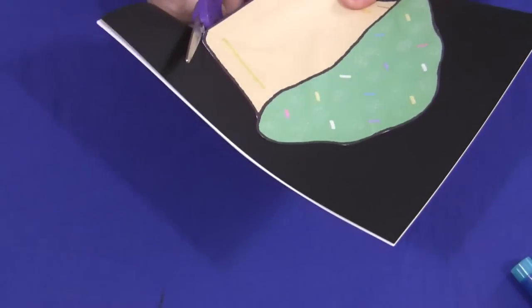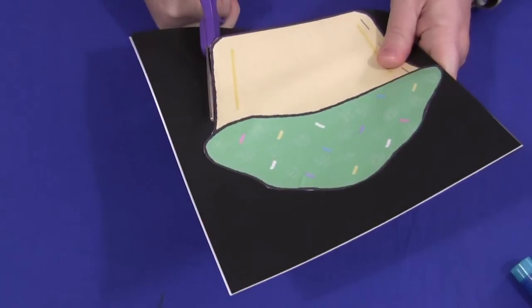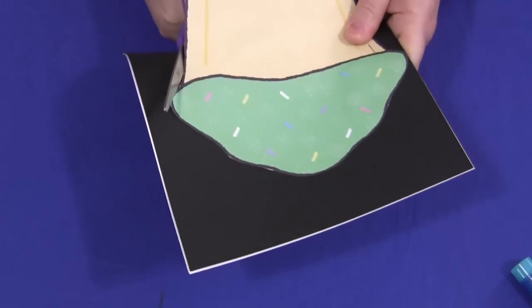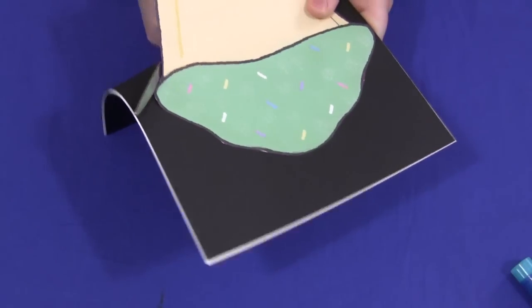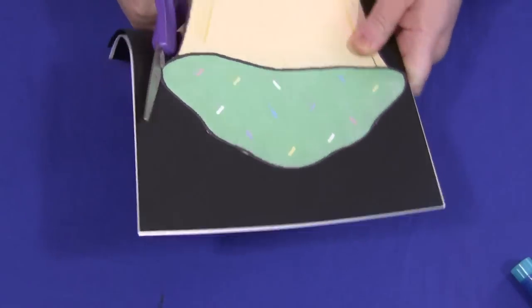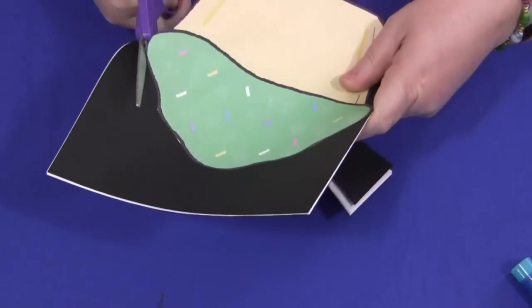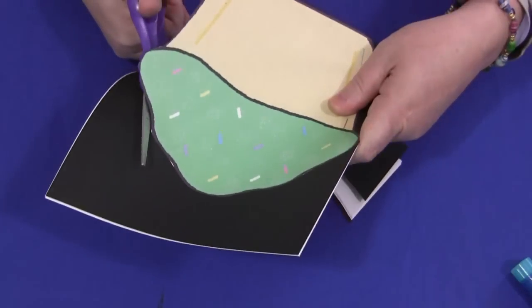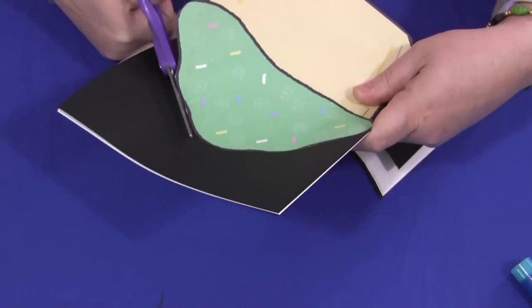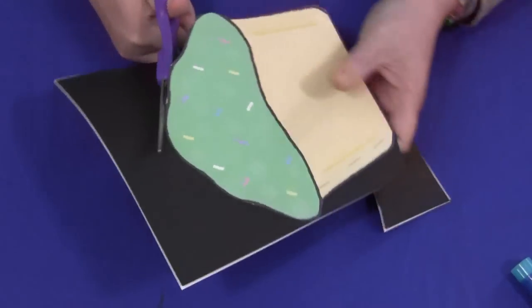And since we're doing a cupcake theme this week, we're having a cupcake shaped book. But again, these can be used for so many things because they're blank inside. Children can decide what they want to put in it, like a little journal entry. And again, they can sign their names and have autograph books of other children.